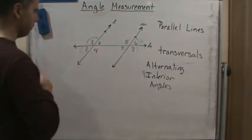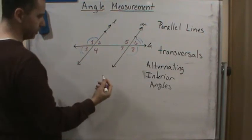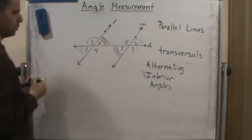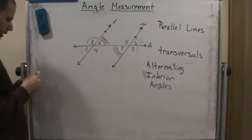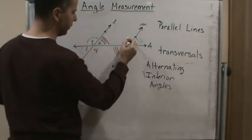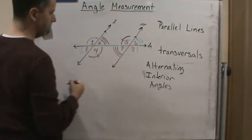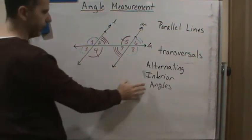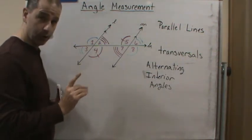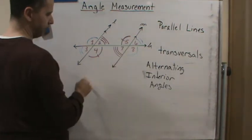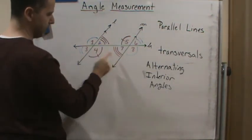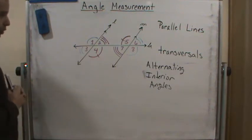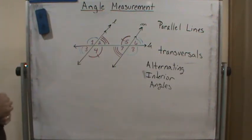An example of alternating interior angles would be angles 2 and 7. Alternating interior angles are also congruent. So that means angle 4 has the same measure as angle 5, and angle 2 has the same measure as angle 7. So those are two things we know when it comes to transversals.